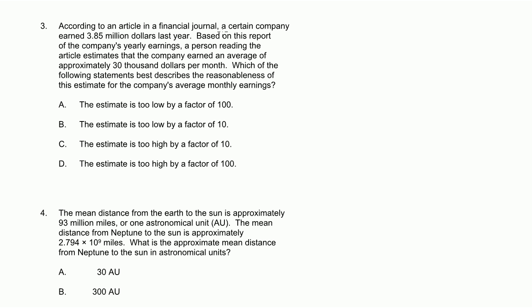According to an article in a financial journal, a certain company earned 3.85 million dollars last year. Based on this report of the company's yearly earnings, a person reading the article estimates that the company earned an average of approximately $30,000 a month. They're saying estimates. So we don't have to do the exact math. Which of the following statements best describes the reasonableness of this estimate?